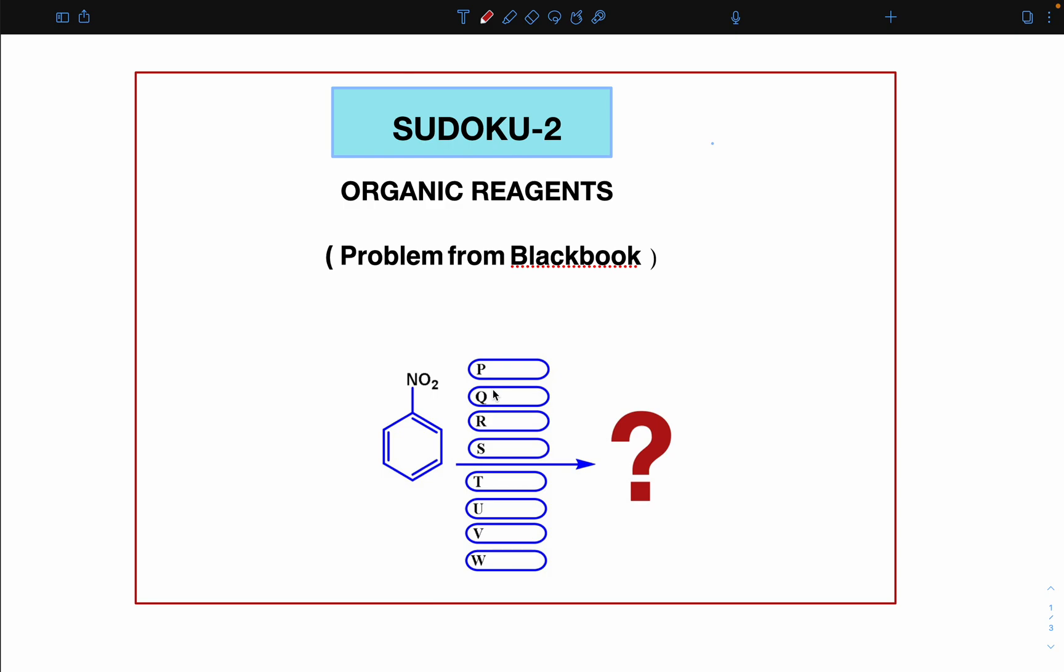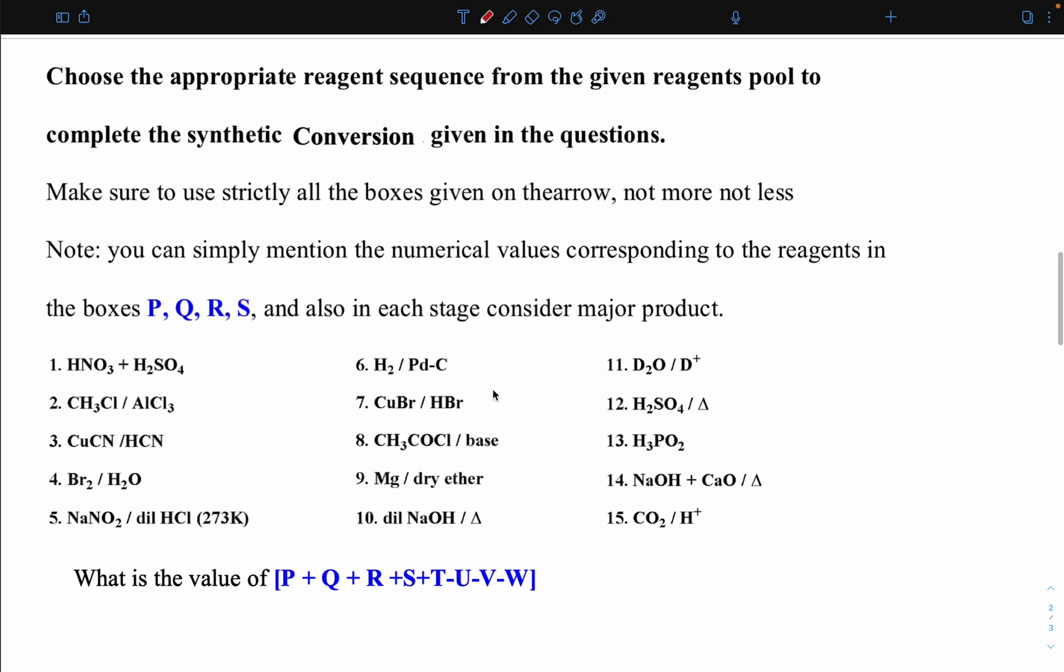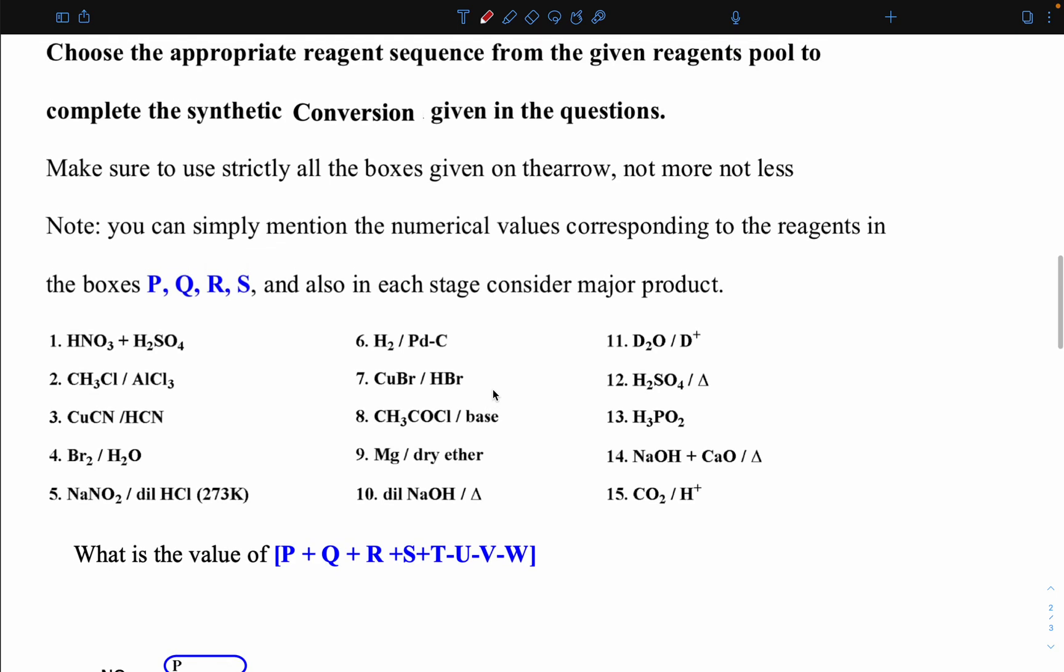From a black book of organic chemistry. In today's session, the question is: choose the appropriate reagent sequence from the given reagent pool to complete the synthetic conversion given in the question. This is like the previous session question. Make sure to use strictly all the boxes given on the arrow, not more, not less. We have to fill all the boxes and you can simply mention the numerical values corresponding to the reagents in the boxes P, Q, R, S.